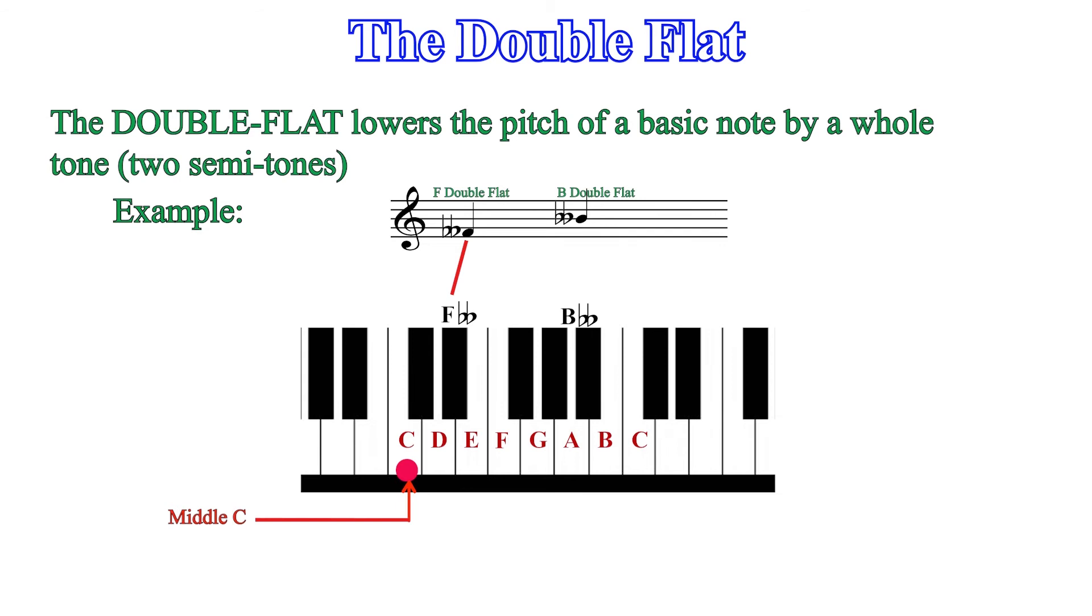The second example is B double flat. B is a white key and B flat is the next black key behind B, normally named B flat. B double flat will therefore move to the white key behind B flat, which is in this case A. So B double flat is equal to A, and this is a case of a white key being the double flattened note.